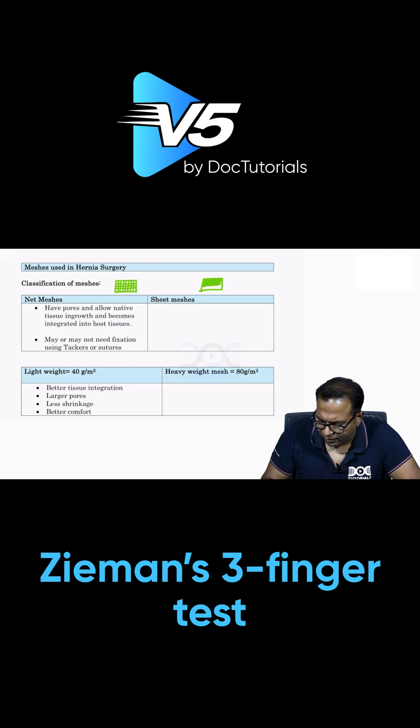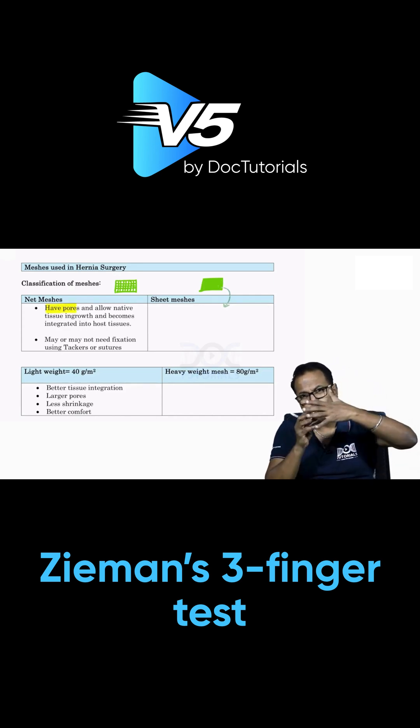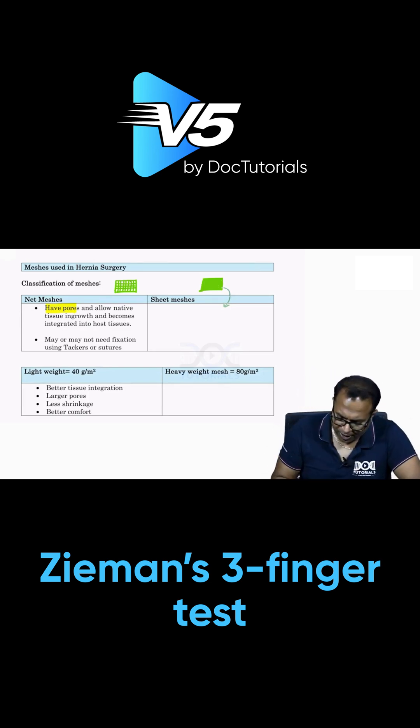Flat sheet mesh is usually not used nowadays. We are only using net mesh having pores that allow tissue growth in between the pores, which holds the mesh and allows native tissue ingrowth and becomes integrated into the host tissue.